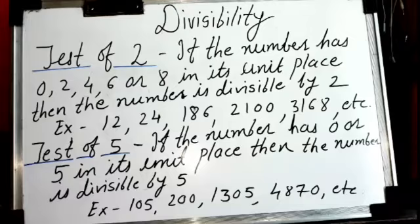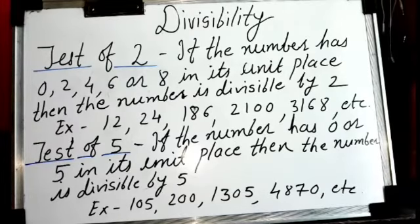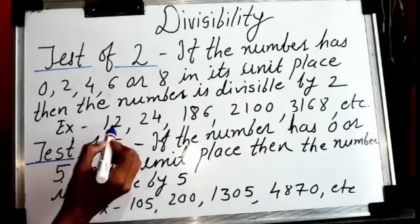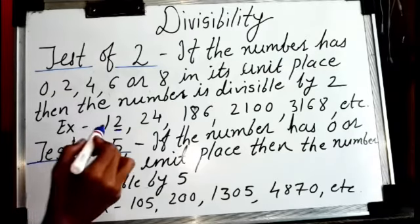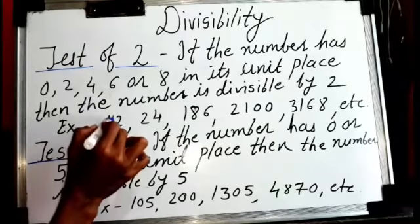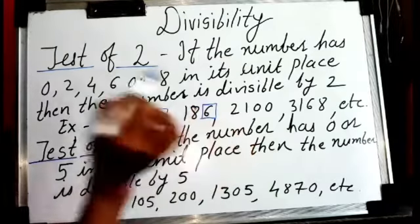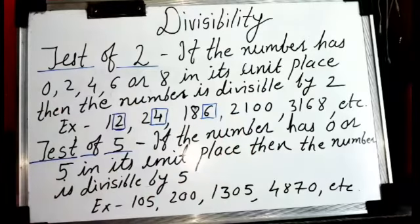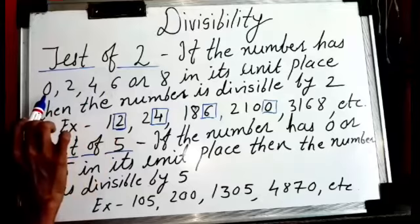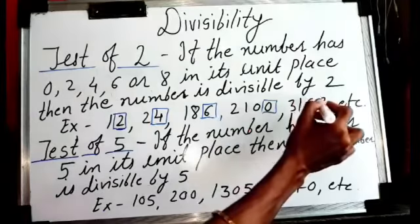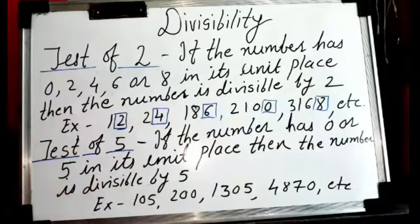The test of two: if the number has 0, 2, 4, 6, or 8 in its unit place, then the number is divisible by two. You just observe the unit place — the first place from the right side. For example: 32 has 2 in the unit place, 54 has 4, 186 has 6, and 2100 has 0 — all are divisible by two. So just by observing the unit place you can decide whether the full number is divisible by two.